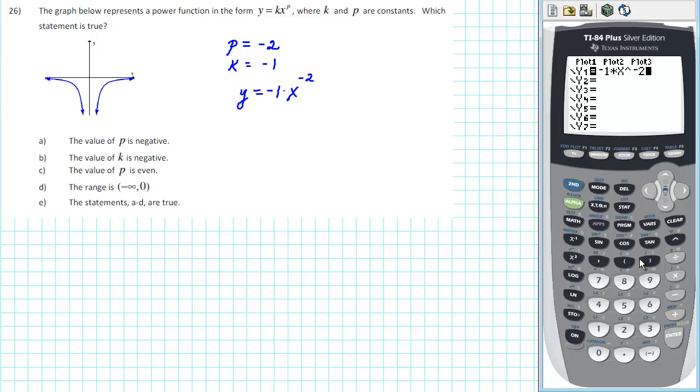We'll then go to zoom in order to get a good viewing window. Go to zoom and I'm going to select zoom decimal number 4.